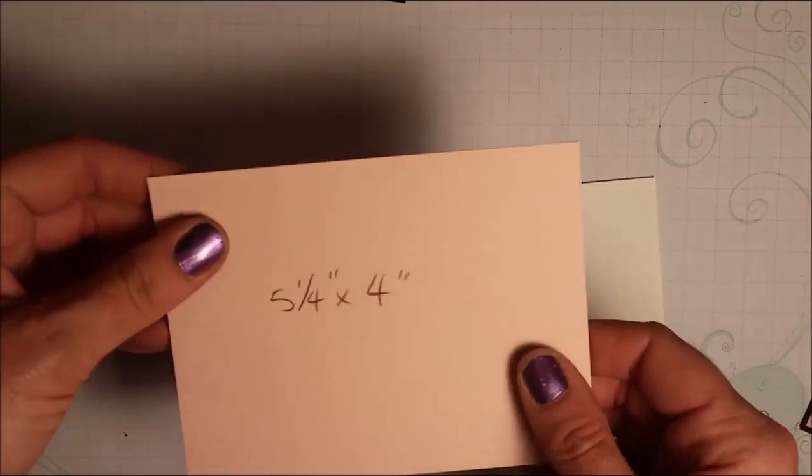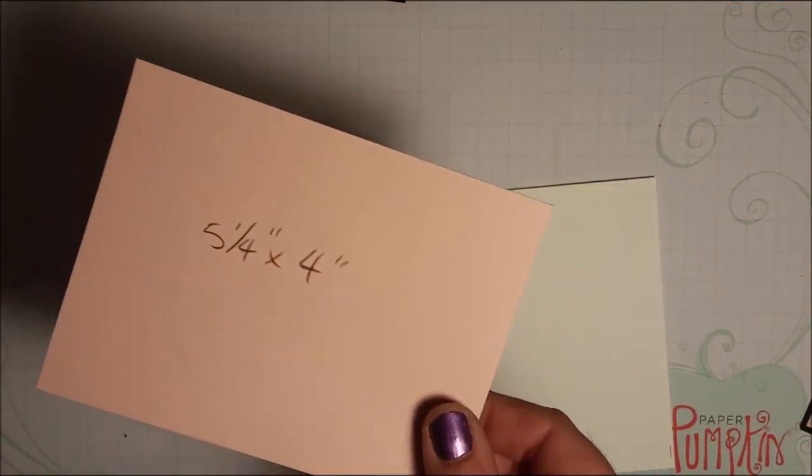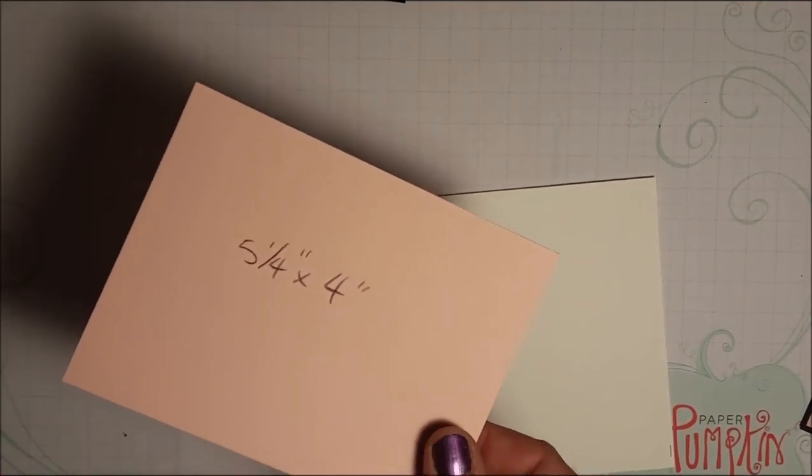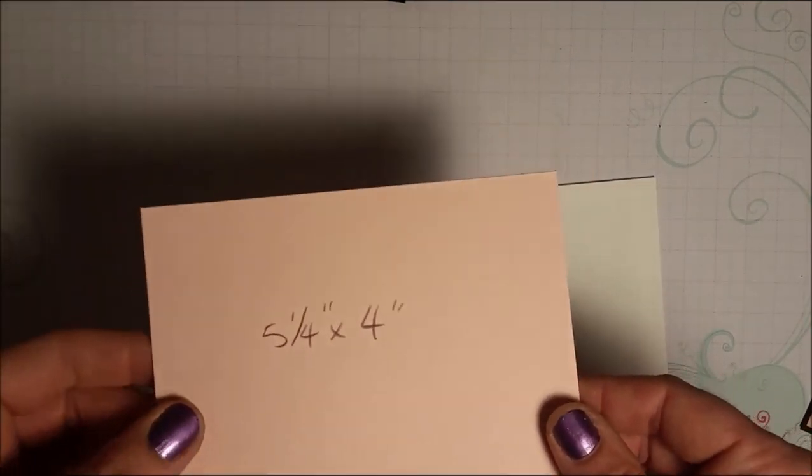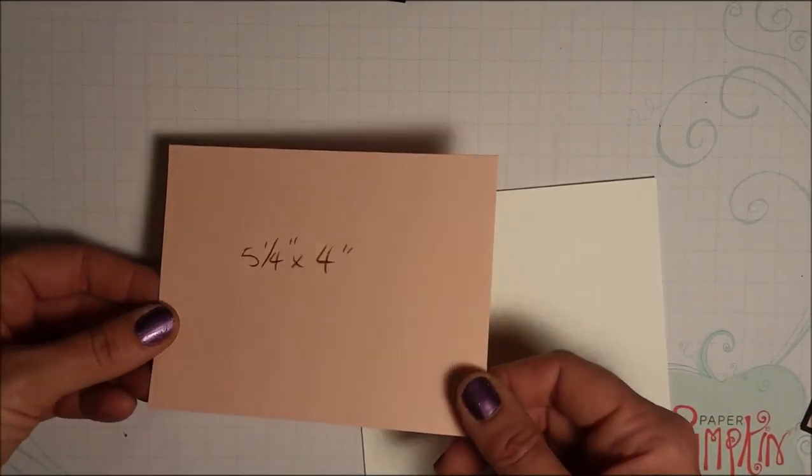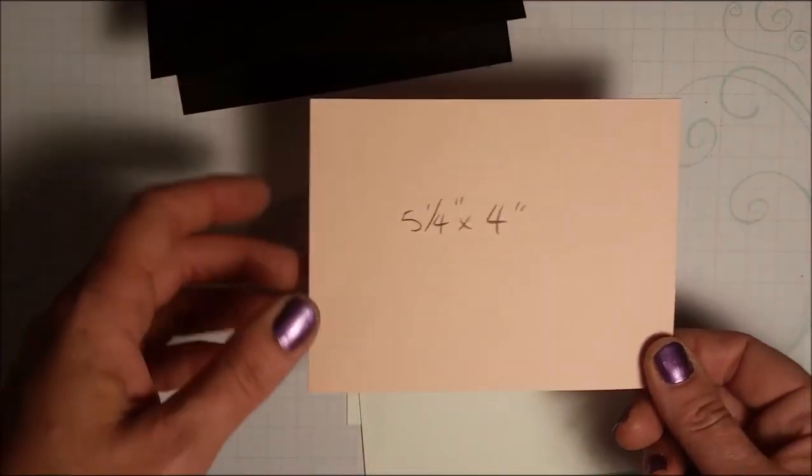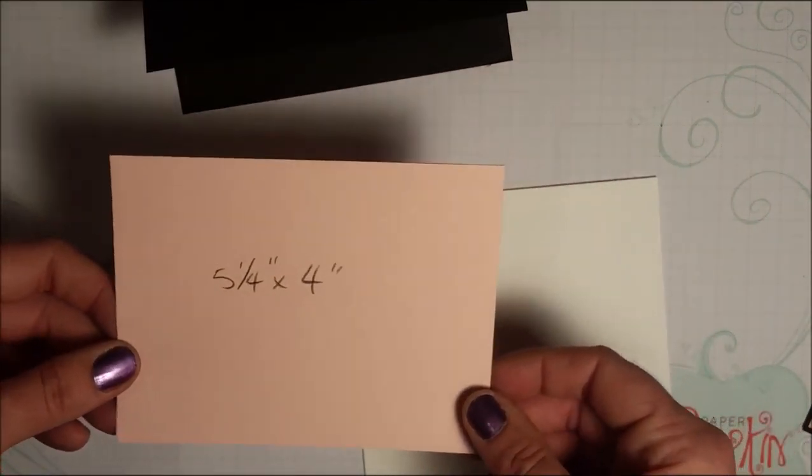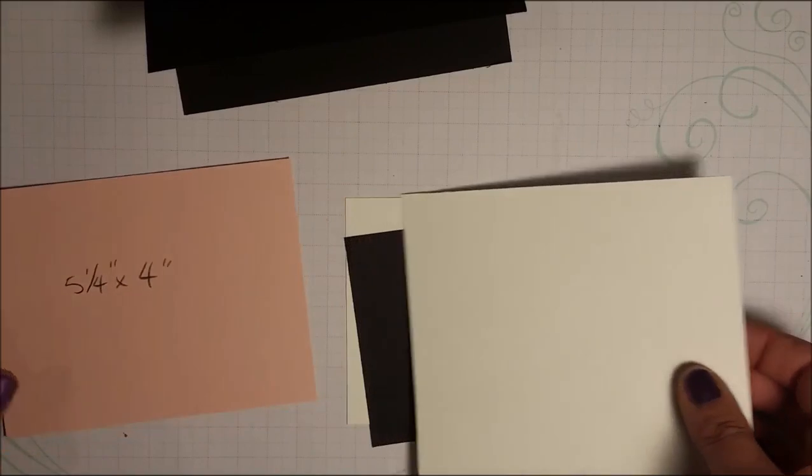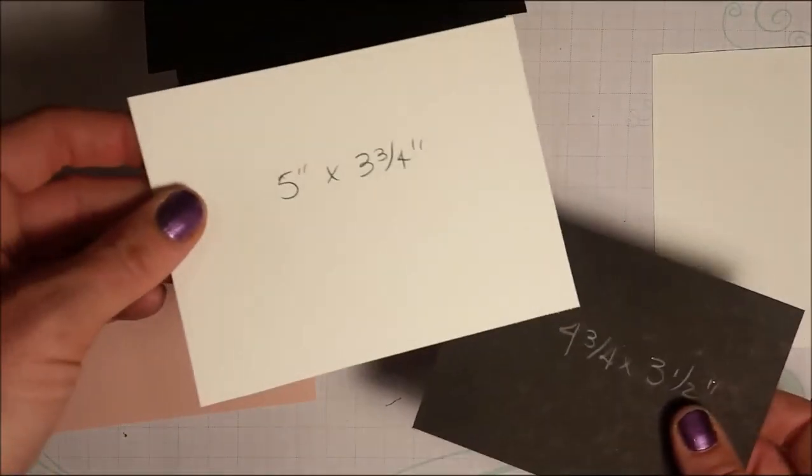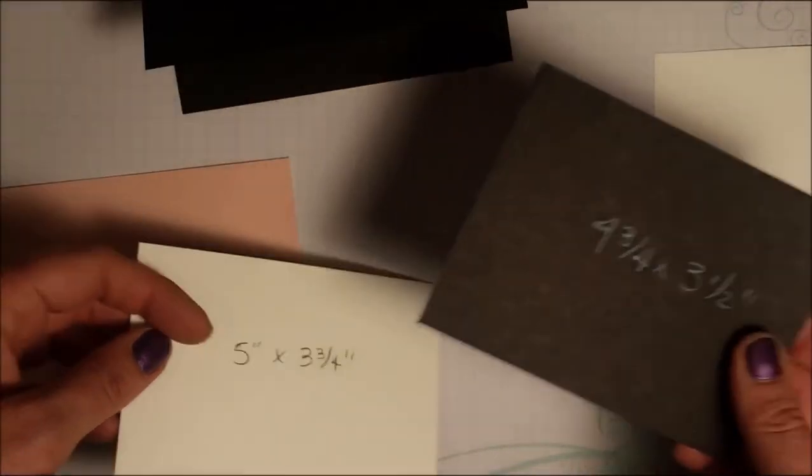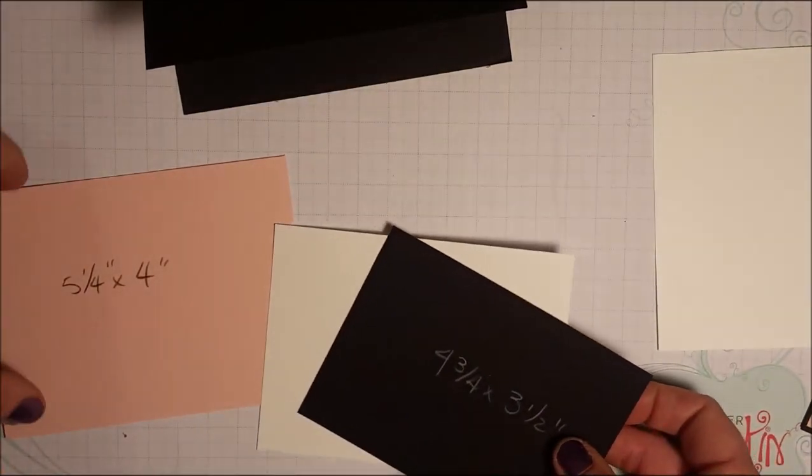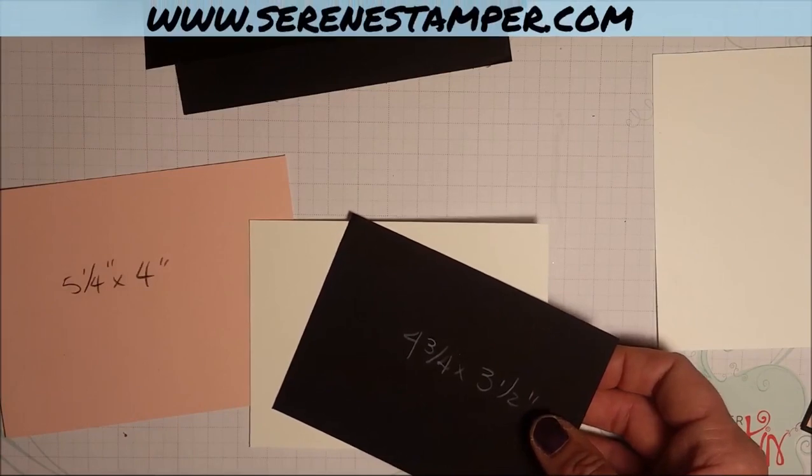Then I have a piece of our new powder pink, one of the new in-colors, it's lovely and I've been waiting for a nice pink that was a little bit darker so I'm really happy with this. And then I have a piece of whisper white that measures five and three quarters and a piece of basic black that measures four and three quarters by three and a half. All these measurements will be on my blog today as well.